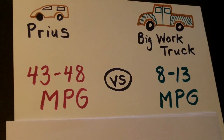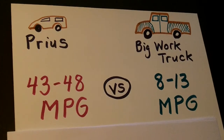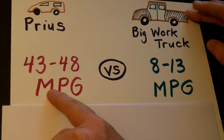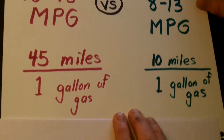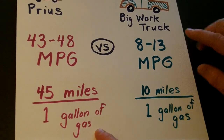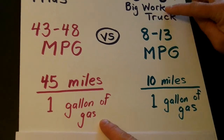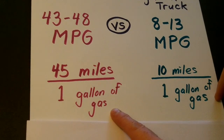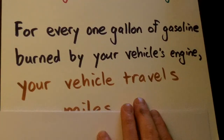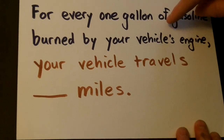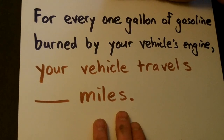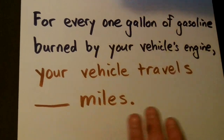If you're driving to Riverside and back, you'd save a lot of money driving the Prius because it gets so many miles per gallon. For example, a particular Prius travels 45 miles per one gallon, while a particular work truck goes only 10 miles per gallon — so you spend a lot more money with the truck. The rate of gas mileage can be stated as: for every one gallon of gasoline burned, your vehicle travels blank miles.